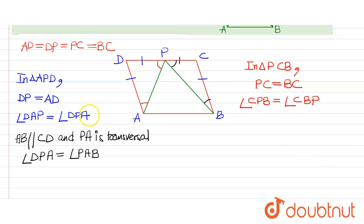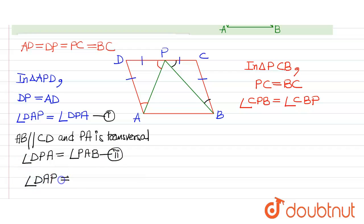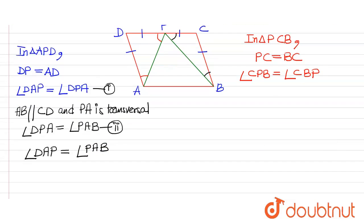So from equation 1 and equation 2, we can say that angle DAP equals angle PAB. Therefore AP bisects angle A.